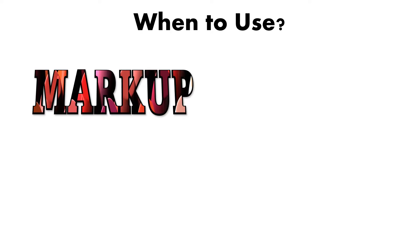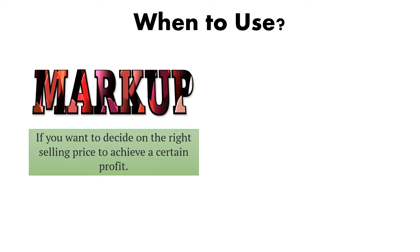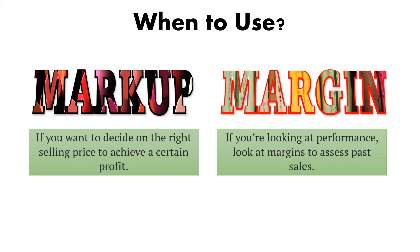When to use markup and margin: Markup is used if we want to decide on the right selling price to achieve a certain profit. While margin is used if we are looking at performance — we tend to look at margins to assess past sales. To remember easily: markup is used when we are still identifying how much the product will be sold for, while margin is used when the product is already sold or we are assuming it is already sold.